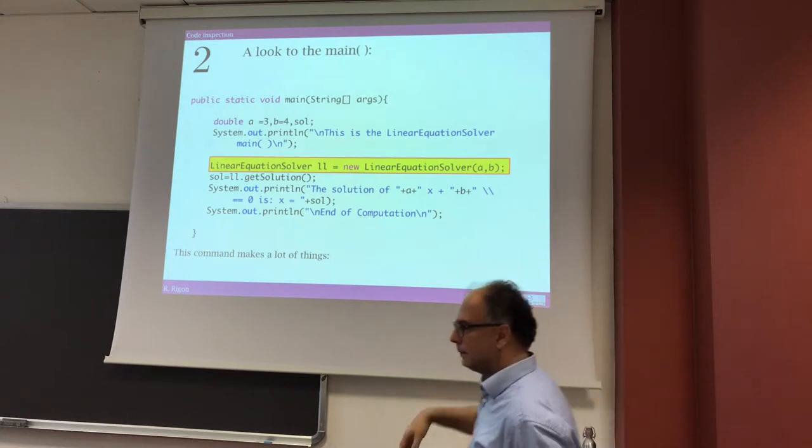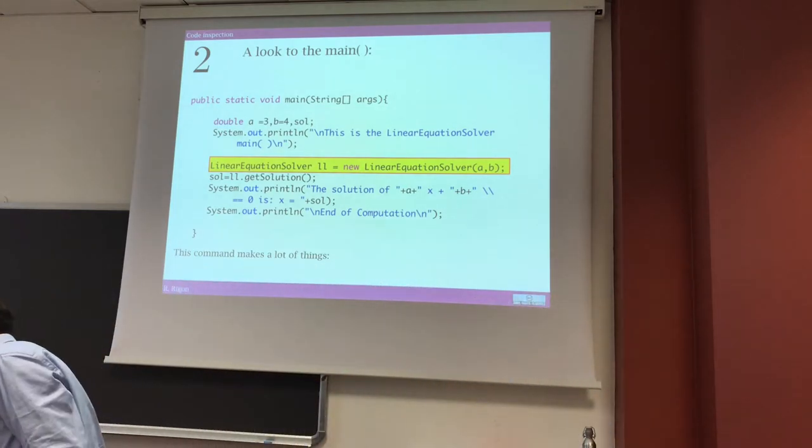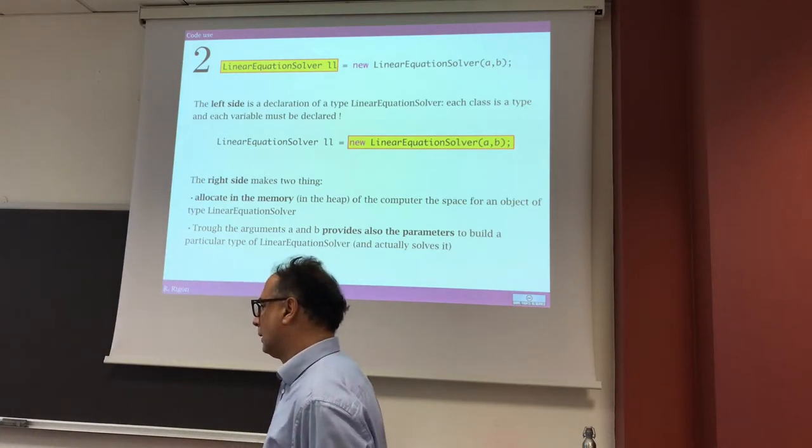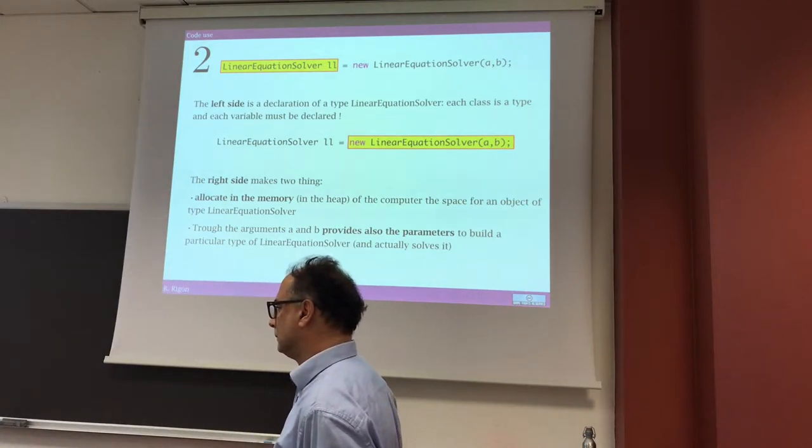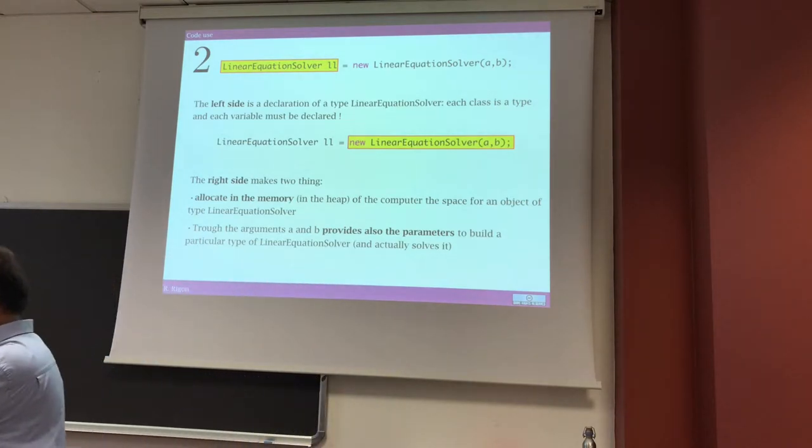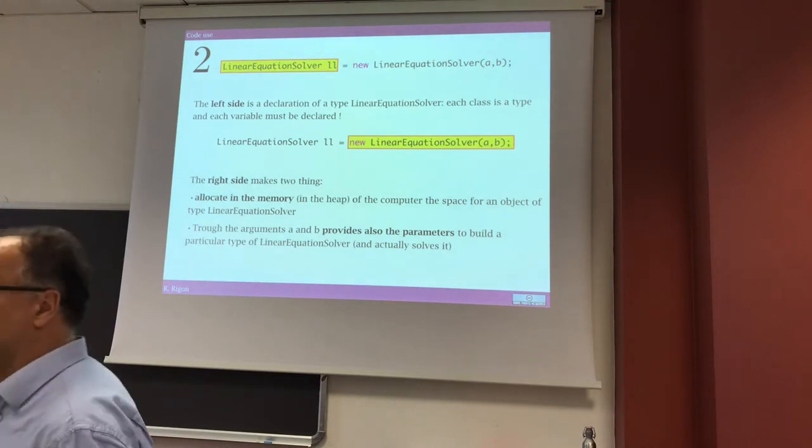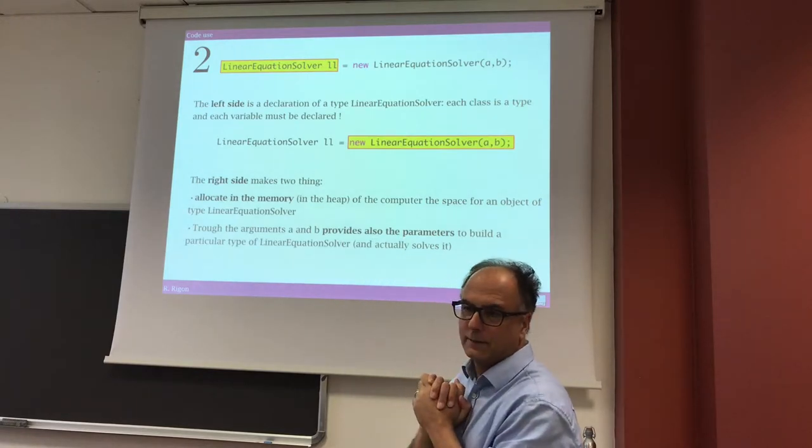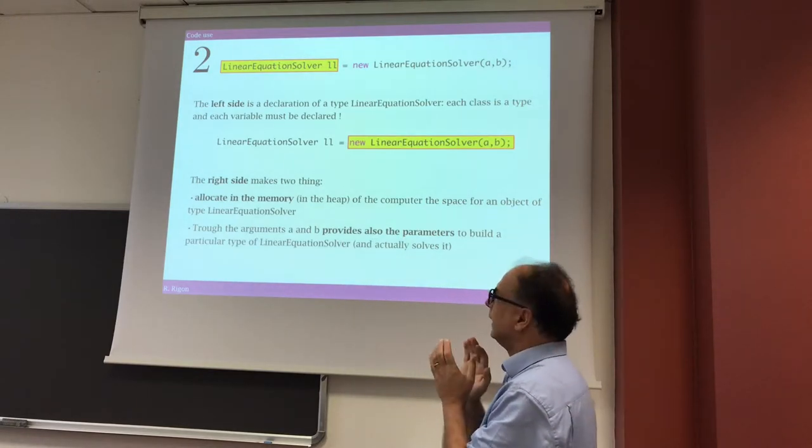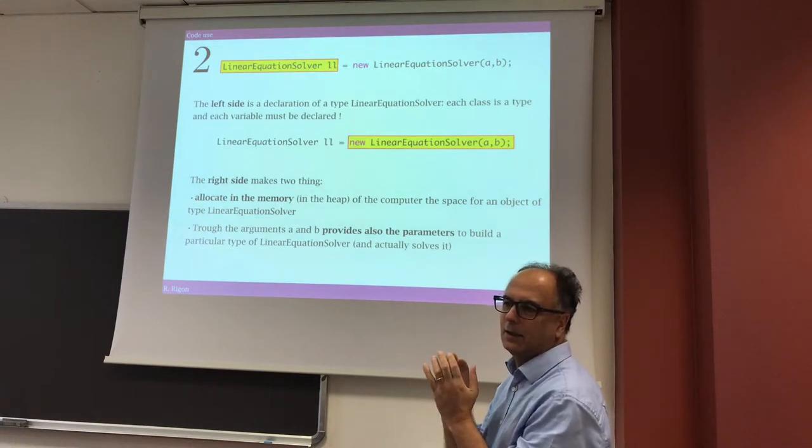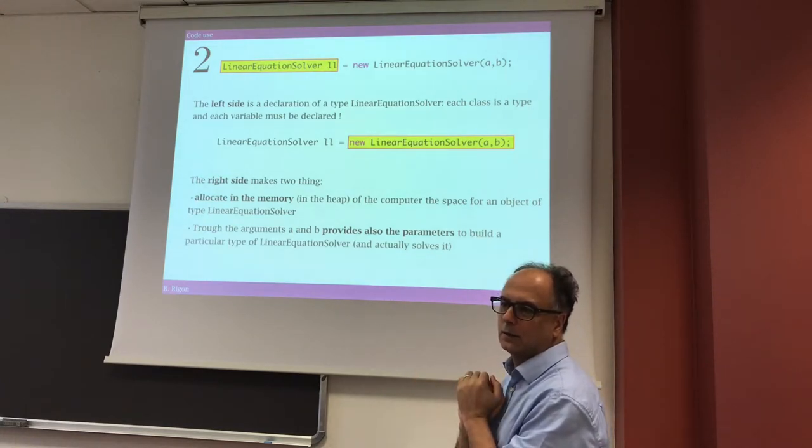Usually, you have to call a method of a class, you have to put the class name and the method name, except for the constructor. The constructor, you just put the constructor name, the name of the class, with the field A and B. That's on the right side. On the left side, instead, there is another thing. On the left side, there is a declaration of the variable. So, I say that the variable that I call LL is a type, has a type. And the type is a linear equation solver.